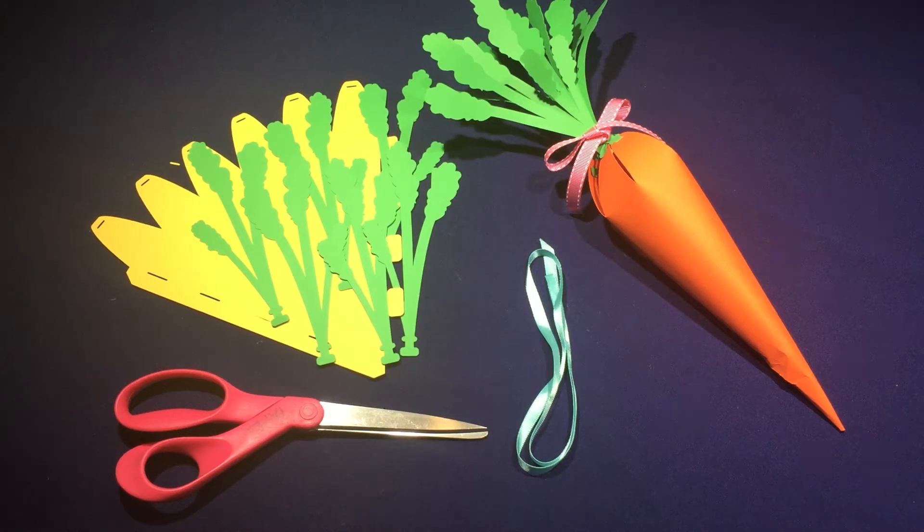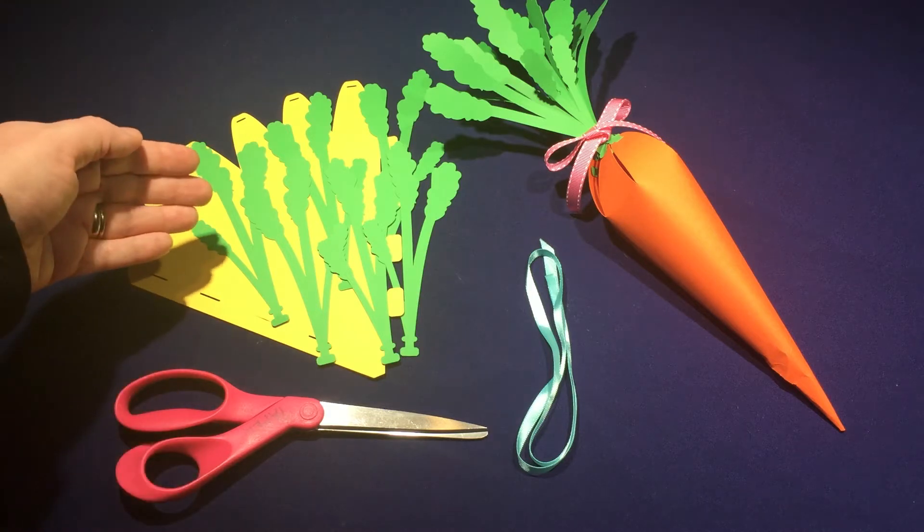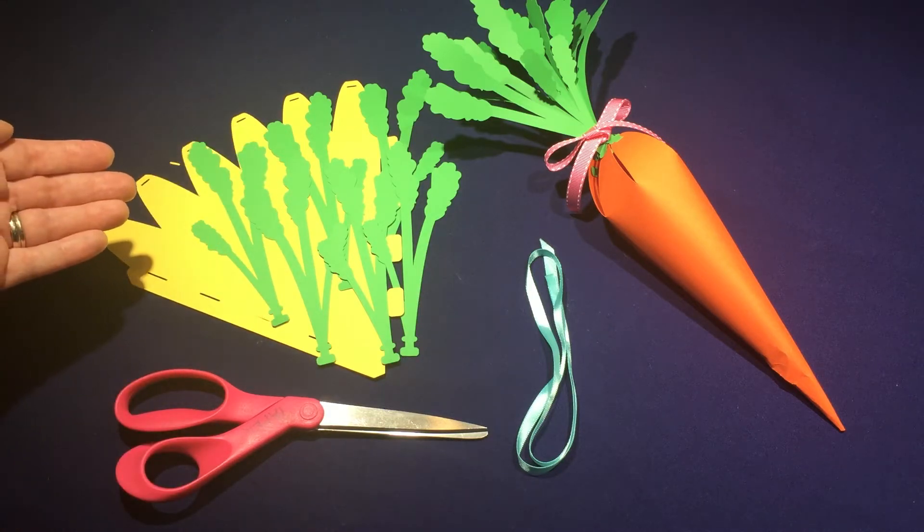Today we're going to make a carrot favor box. This is a no glue project, so all you're going to need are your pieces cut out from the SVG file.